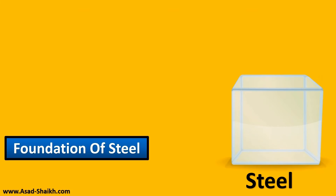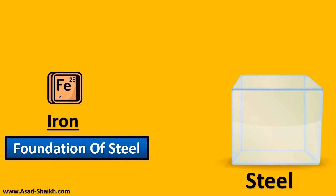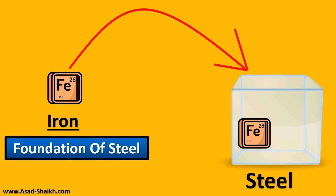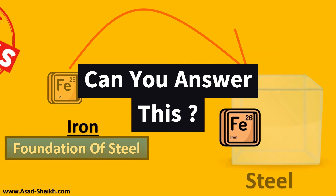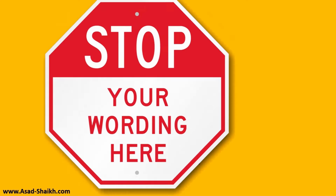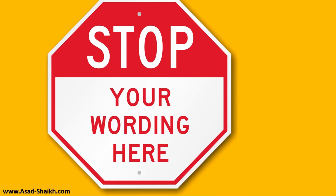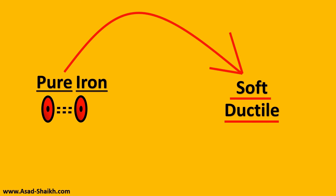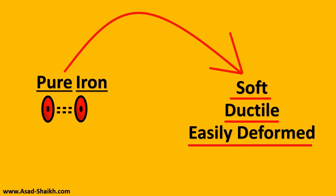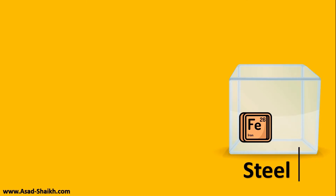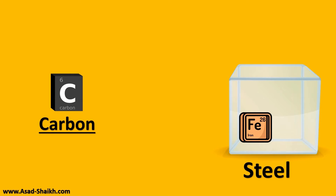Steel in its foundation has a very important element — iron — and iron constitutes the major element in steel. But let me ask you a question: do you think pure iron is strong? If your answer is yes, it is absolutely incorrect. Pure iron is very soft, ductile, and can be easily deformed. So what do we do in such a case?